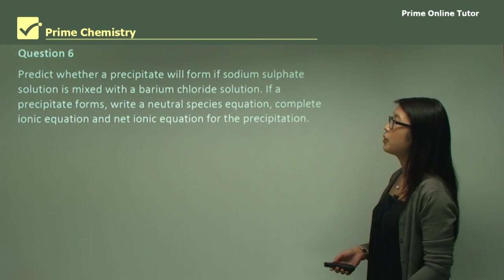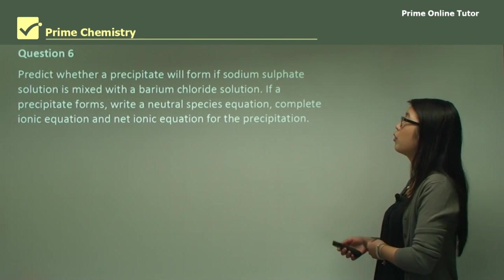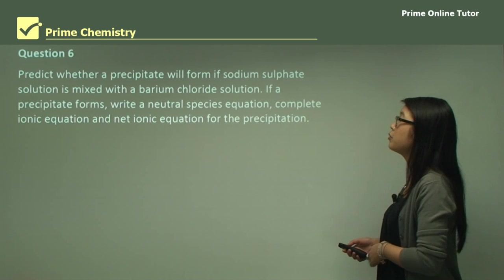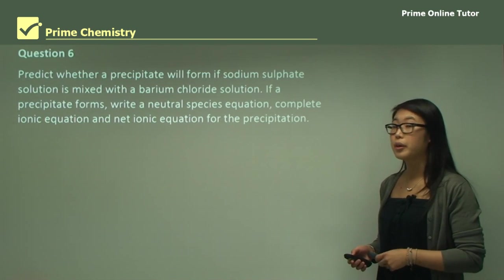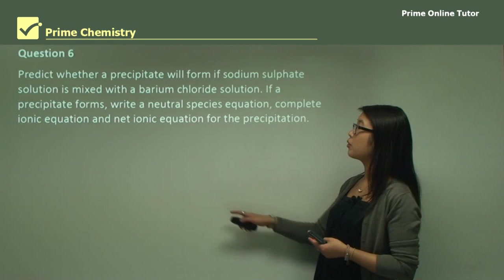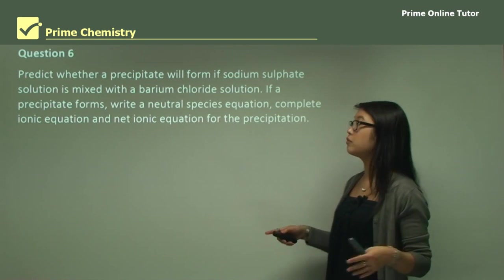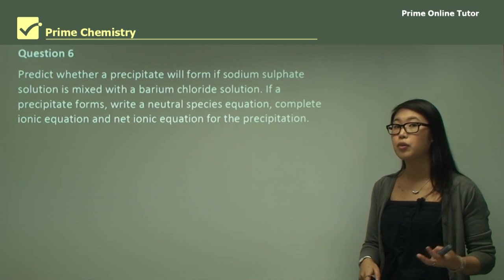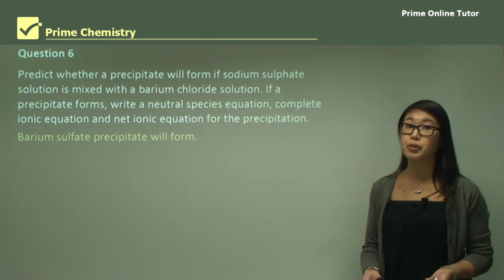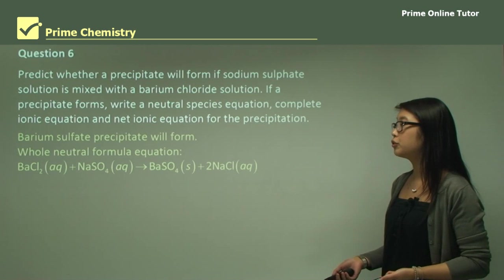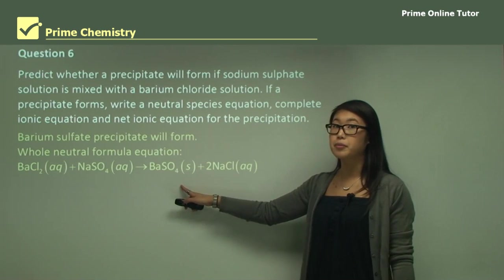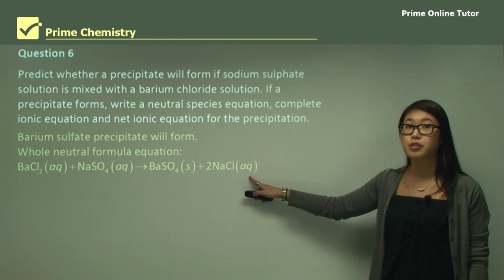Question six: predict whether a precipitate will form if sodium sulfate solution is mixed with barium chloride solution, and if so write a neutral species equation, complete ionic equation, and net ionic equation. Barium sulfate is a precipitate, so a precipitate will form. The neutral species equation: barium chloride plus sodium sulfate forms solid barium sulfate and sodium chloride in solution — note there are no charges on anything.